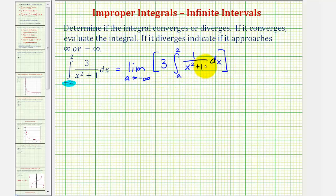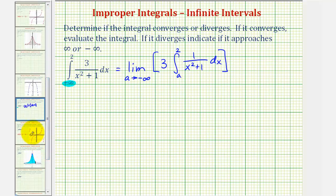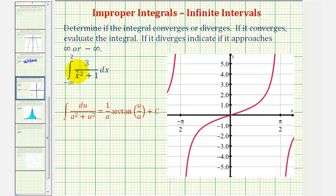So now we'll integrate and then determine the limit. To integrate, we'll be applying this integration formula here. Notice how we can change the order of the sum, and therefore a squared is one, which means a is one, and u squared would be x squared, so u is just x. So if a is one and u is x, our anti-derivative would be just arctangent x plus c.